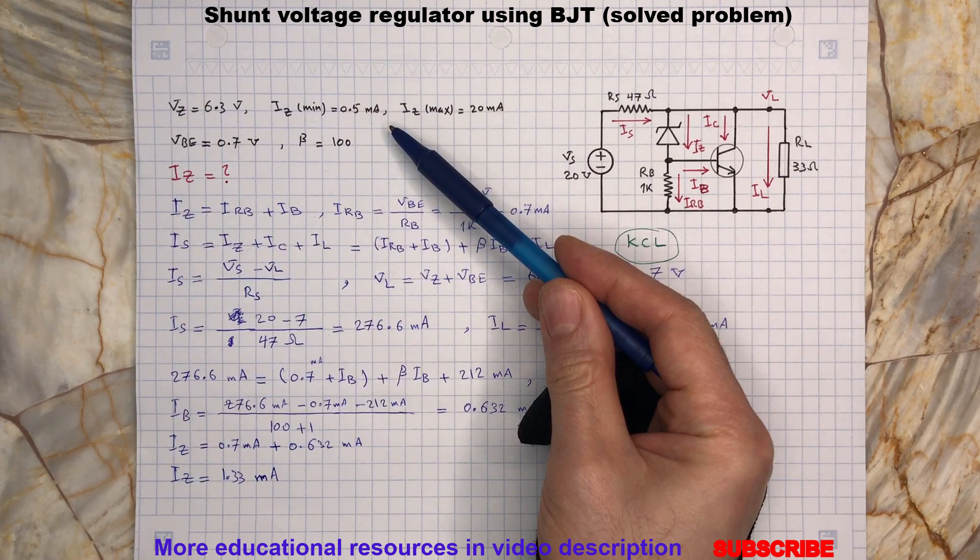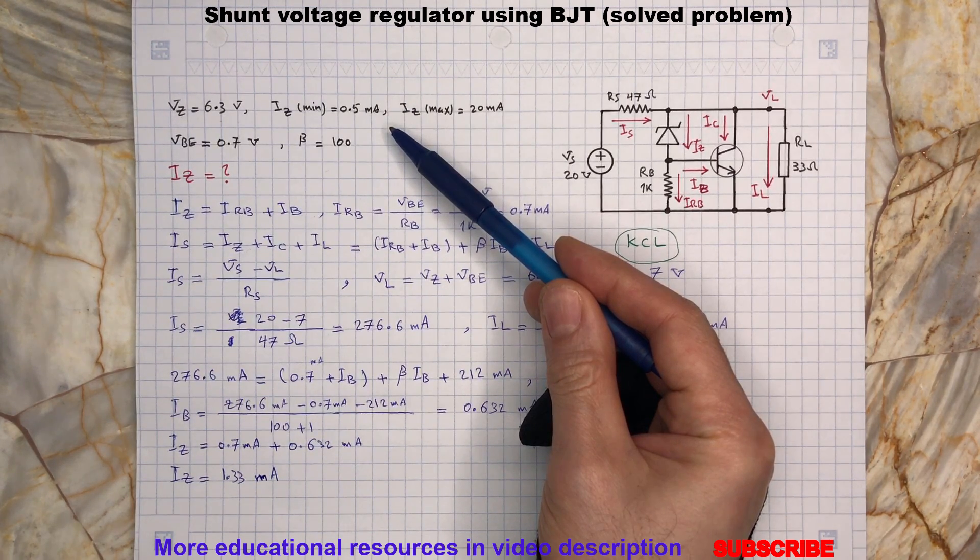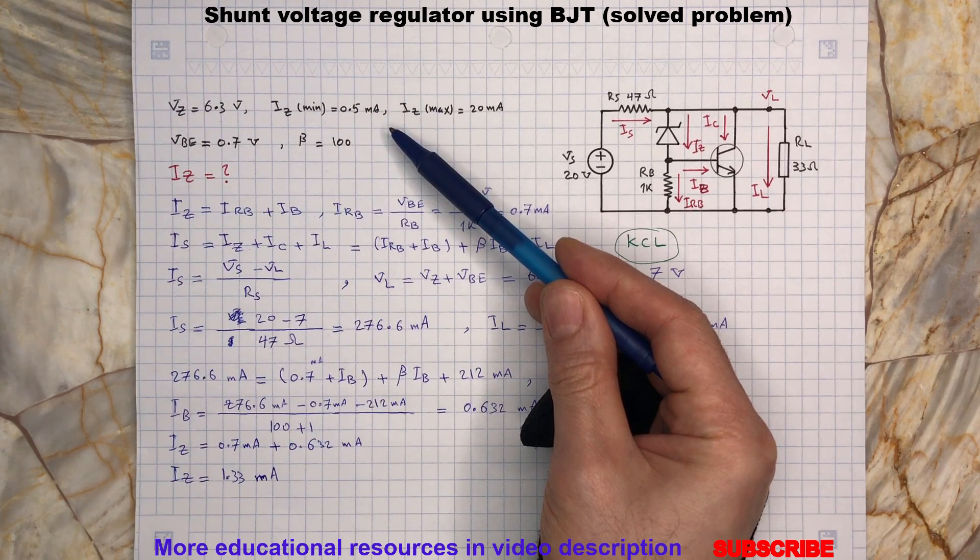We can see that the Zener current is within the required minimum and maximum specified by the problem, so the Zener diode is on and our assumption was correct.